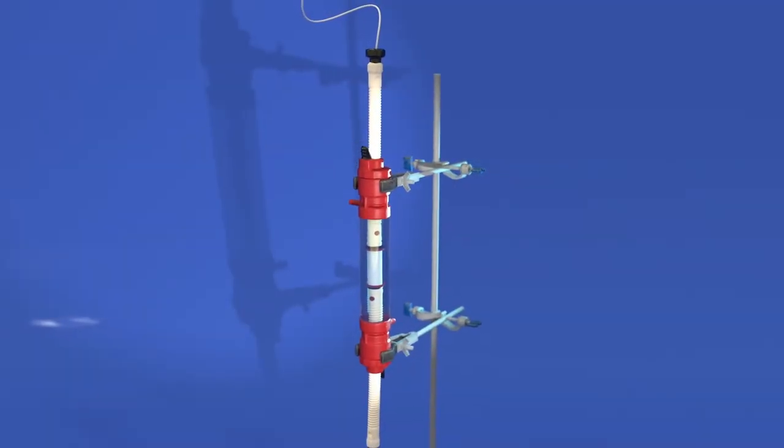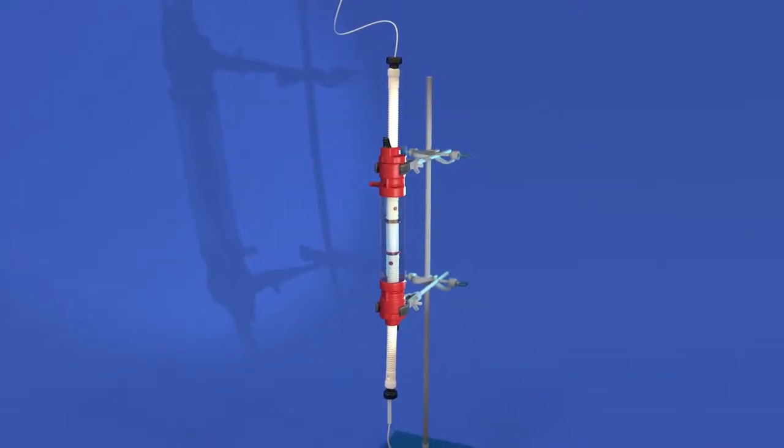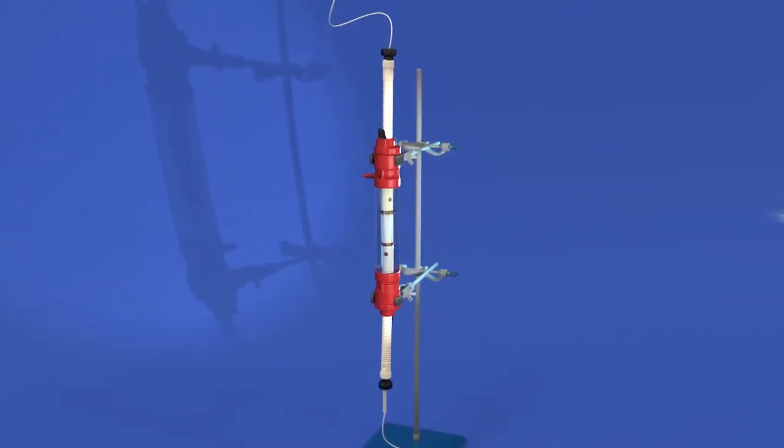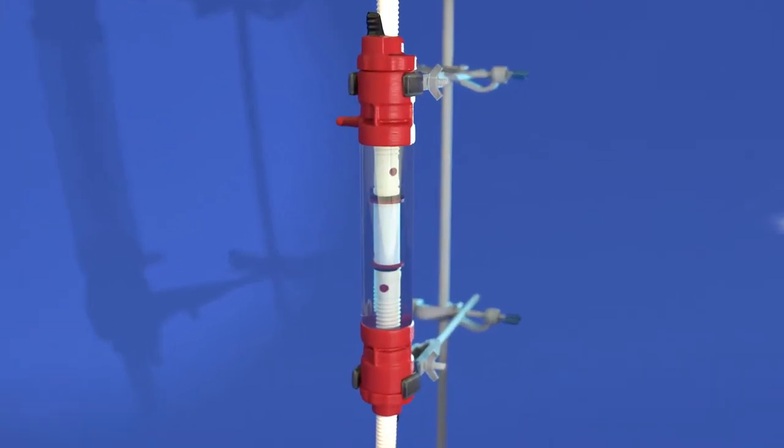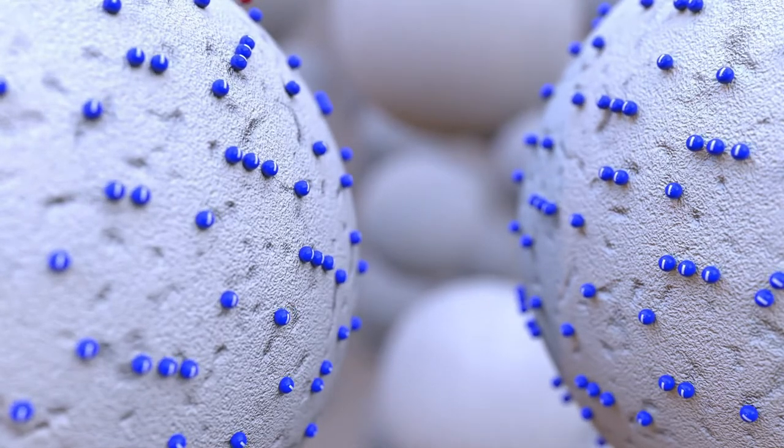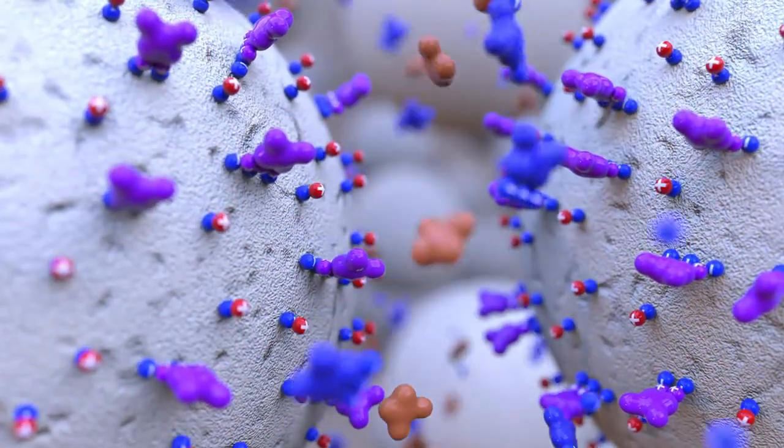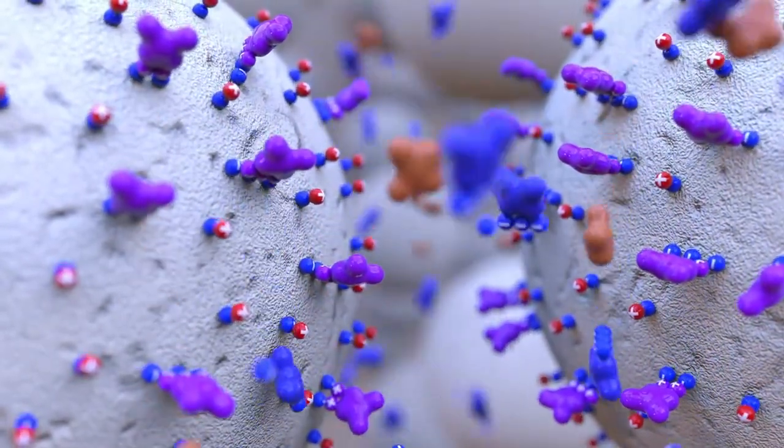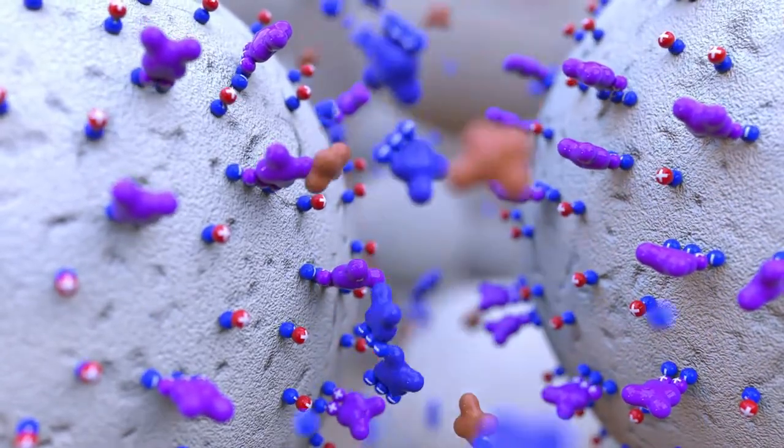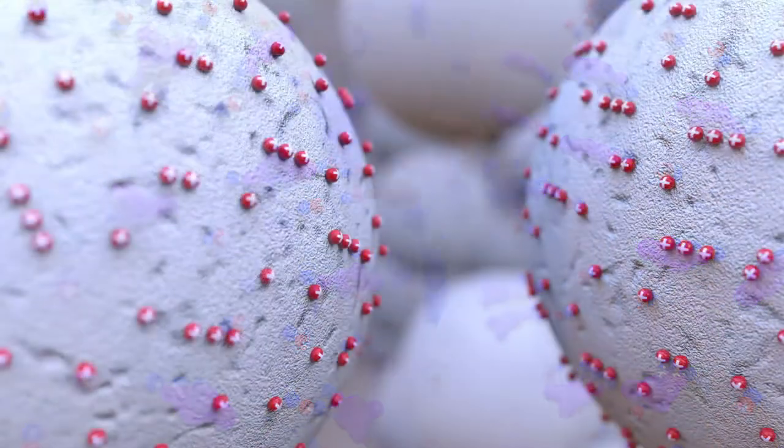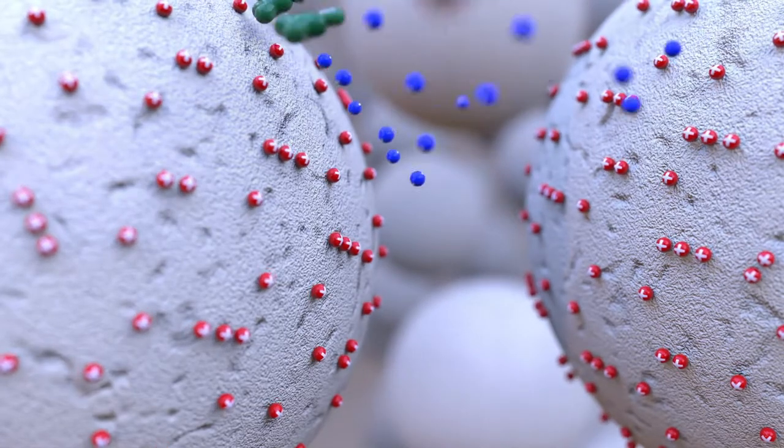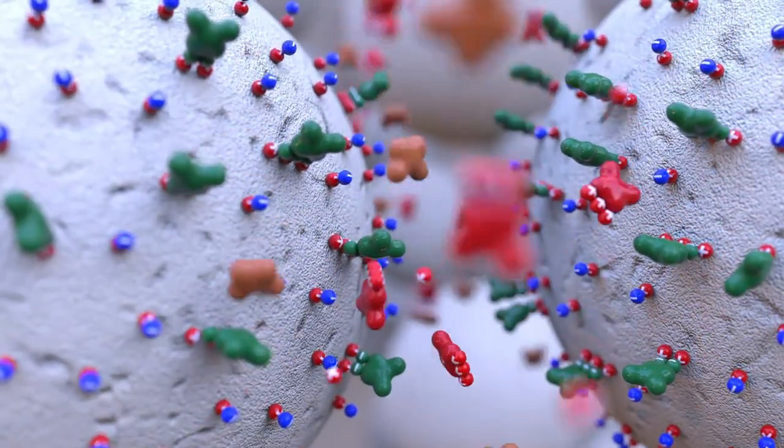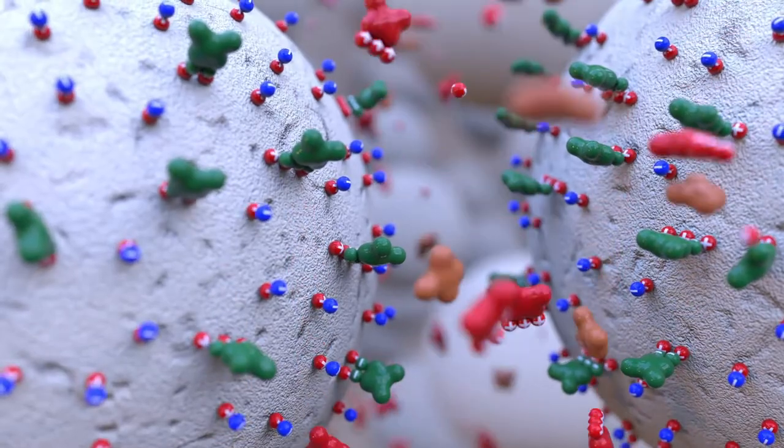In ion exchange chromatography, the beads comprising the resins can be selected with either positive or negative charges. When using this process to separate proteins, negatively charged ion exchange resins can bind to positively charged proteins and separate them from negatively charged proteins. Similarly, positively charged resins will bind negatively charged proteins, allowing them to be separated from positively charged proteins.